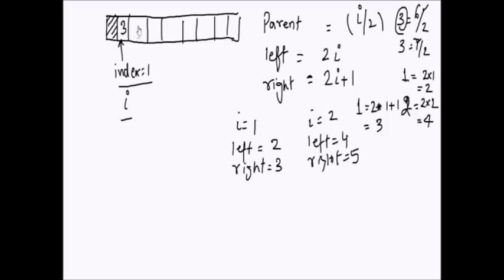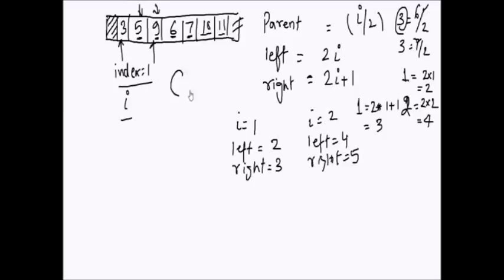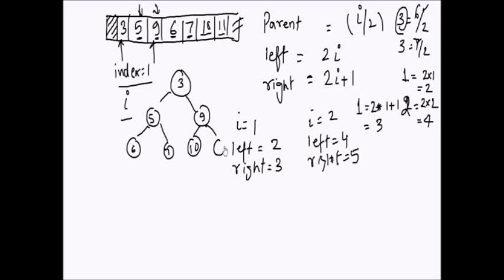For example, if the array is 3, 5, 9, 6, 7, 10, 11 — the children of 3 are 5 and 9; children of 5 are 6 and 7; children of 9 are 10 and 11. This is a min heap because the parent is always smaller than its children — as you can see when you draw it out.